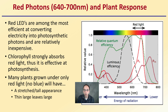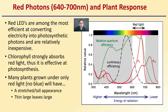Red photons, in the 640 to 700 nanometer wavelength range, drive plant response. Red LEDs are among the most efficient at converting electricity into photosynthetic photons and are relatively inexpensive, which is why you typically see a lot of red LEDs. Chlorophyll strongly absorbs red light and it's effective at photosynthesis. However, many plants grown under only red light with no blue will have a stretched, tall appearance with thin, large leaves. This is why we want to give plants a mixed light — red alone causes an exaggerated tall appearance, which could cause issues.